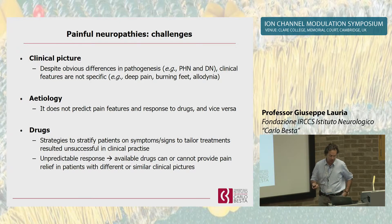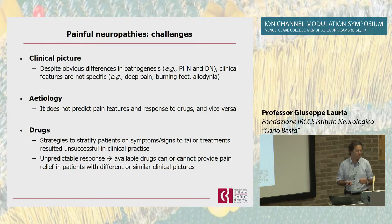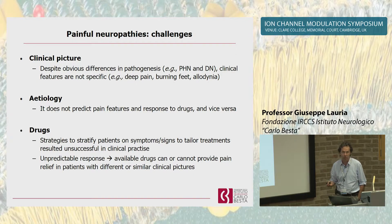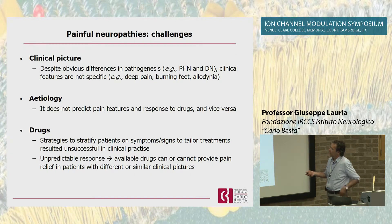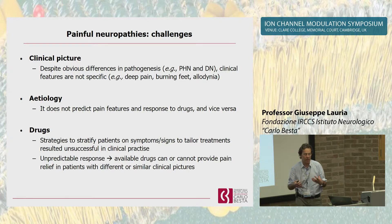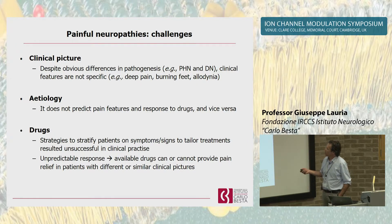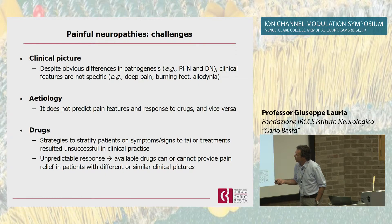Despite obvious differences in pathogenesis, conditions like post-herpetic neuropathy and diabetic neuropathy have clinical features that are not actually specific. The etiology does not predict the pain features or the response to drugs, and vice versa. Attempts at stratifying patients on clinical or sensory profile - there is a large group working on that - have revealed not successful so far in clinical practice. The unpredictable response means you can treat patients with the same disease, with the same drug, and you don't know whether they will respond or not.